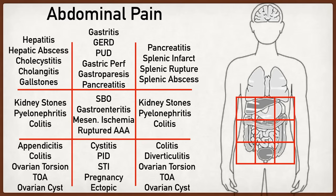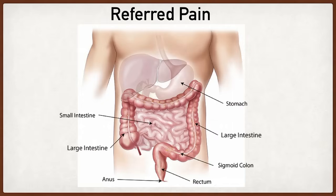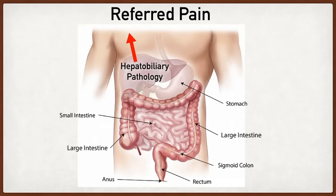Some forms of abdominal pain can lead to referred pain to other areas of the body, or vice versa — pain outside the abdomen can be referred to the abdomen. Starting with hepatobiliary pathology, right upper quadrant pain can often be referred up to the right shoulder. Pancreatitis is another example where pain can radiate to the back — patients often complain of epigastric or left upper quadrant pain that radiates to the back.